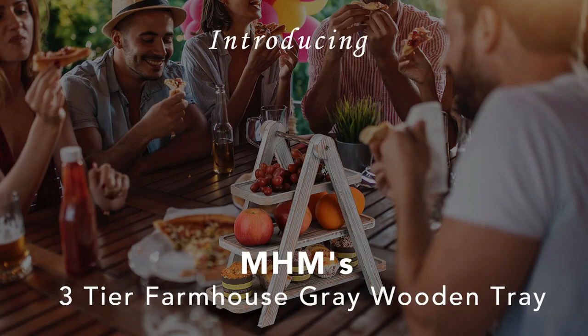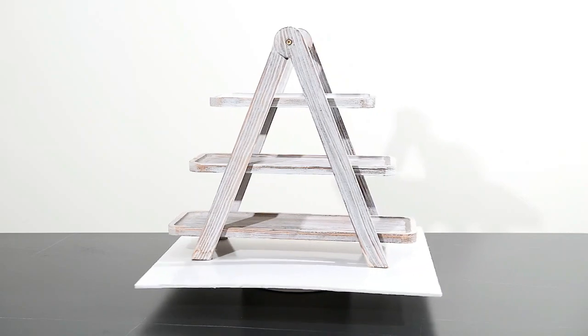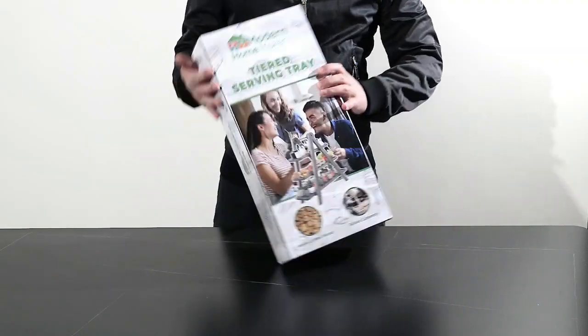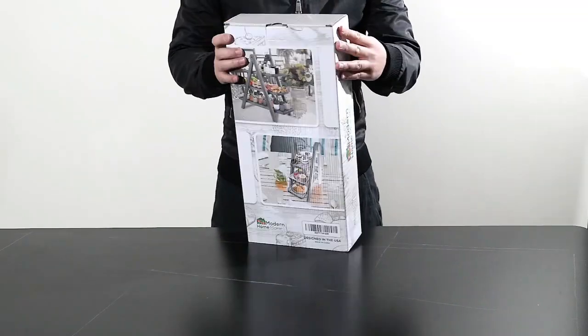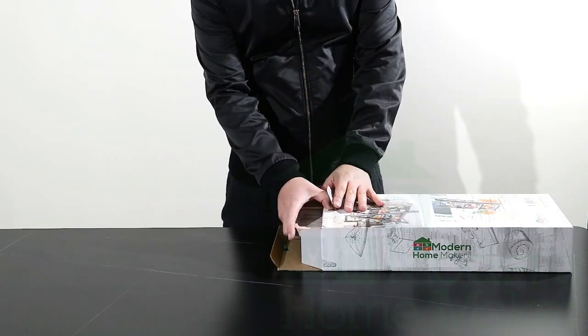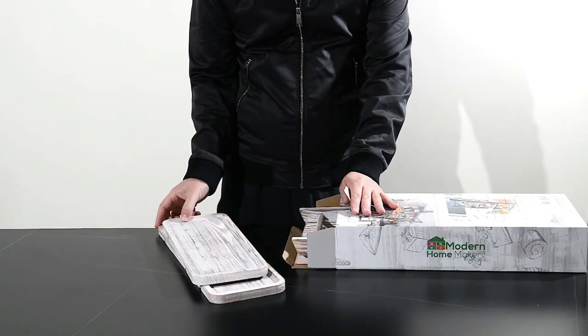Introducing MHM's 3-Tier Farmhouse Gray Wooden Tray. Now let's unbox it! Lay down all the pieces on the table.